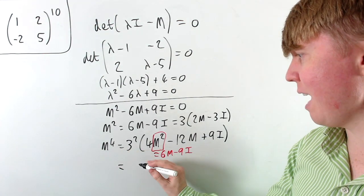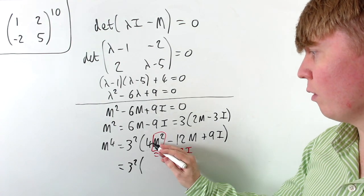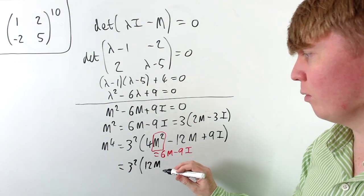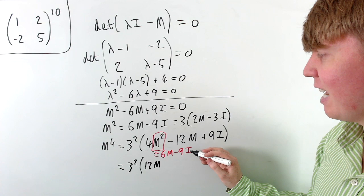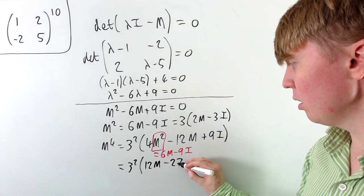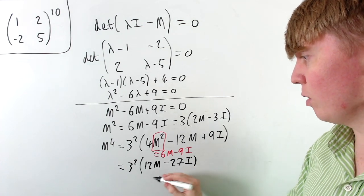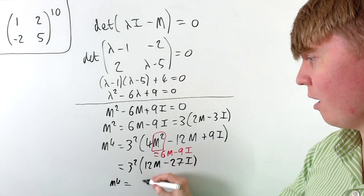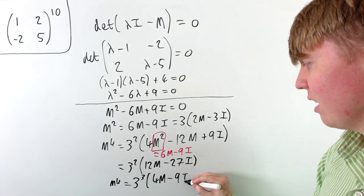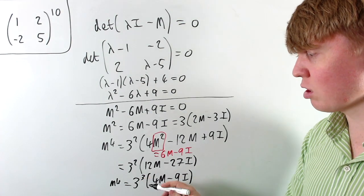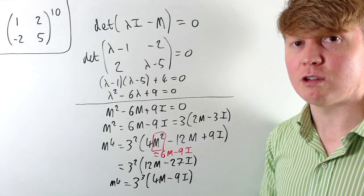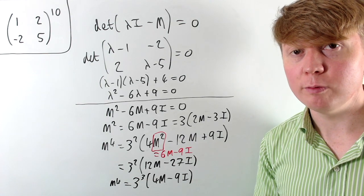This allows us to express M to the 4: we have 3 squared, then 4 times 6M gives 24M minus 12M, so 12M in total. For the identity terms, 4 times negative 9I gives negative 36 plus 9I, so negative 27 times I. Factoring out another 3, M to the 4 equals 3 cubed times (4M minus 9I). This is much easier than raising the matrix to the power of 4 by hand.